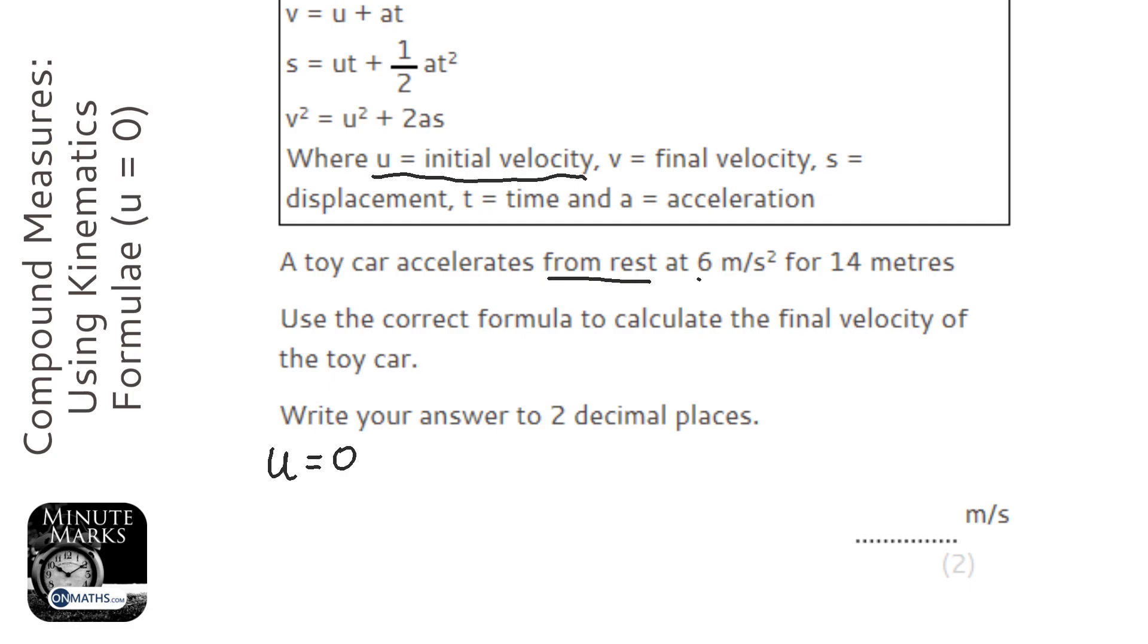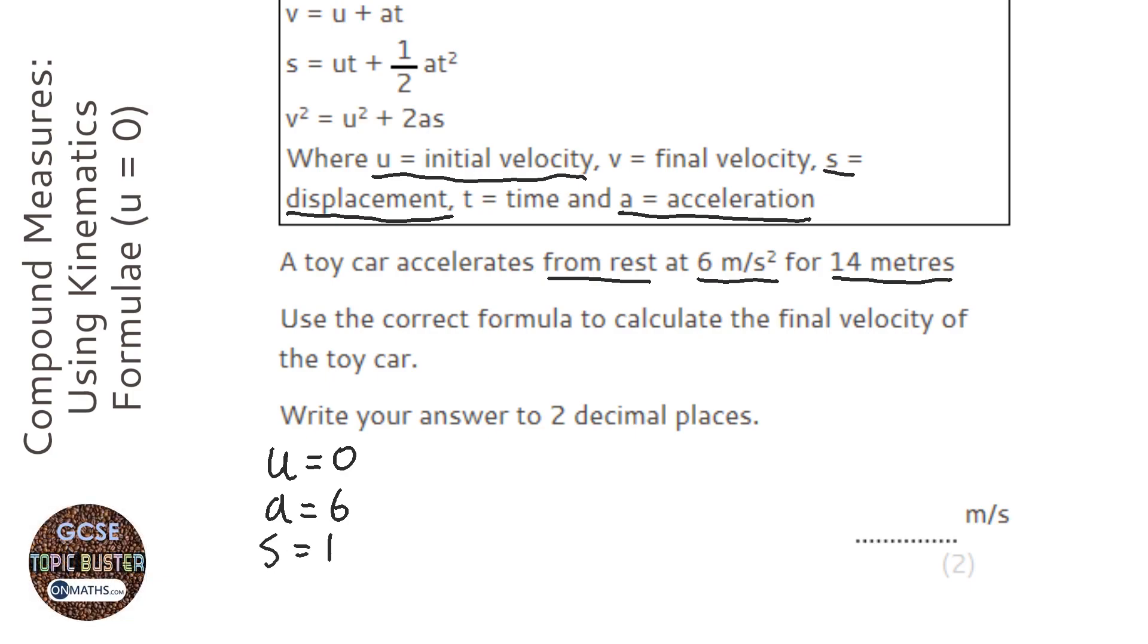It accelerates at that amount, so the acceleration is six, for that distance. Now distance, so we're given the acceleration, let's just do it as we go along. So distance is called displacement when it's a vector, when it's got direction. So S is 14.